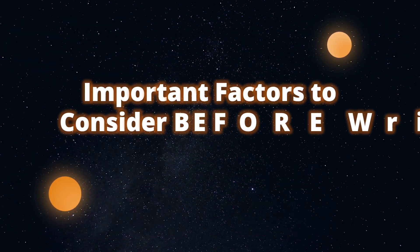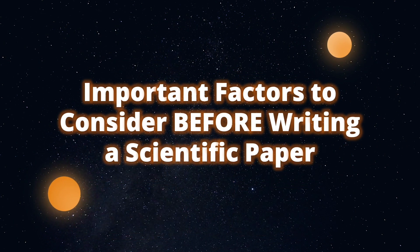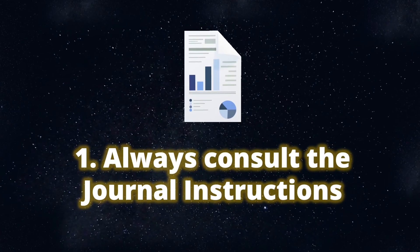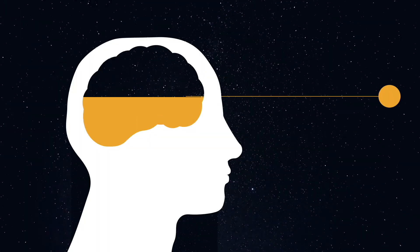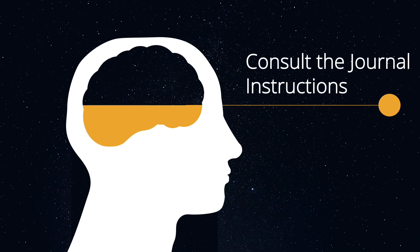Now we will look at important factors to consider before writing a scientific paper. Firstly, always consult the journal instructions to the author. Due to the highly variable structure of a scientific paper, it is always important to consult the journal instructions to the author before starting to write your manuscript. These instructions will explicitly state the structure that the journal uses, and it will save you time and effort in the future as you will have one less revision to do. Many students start writing their manuscript before consulting the journal instructions, and they spend extra time reformatting and reorganizing their paper. Don't let that be you.